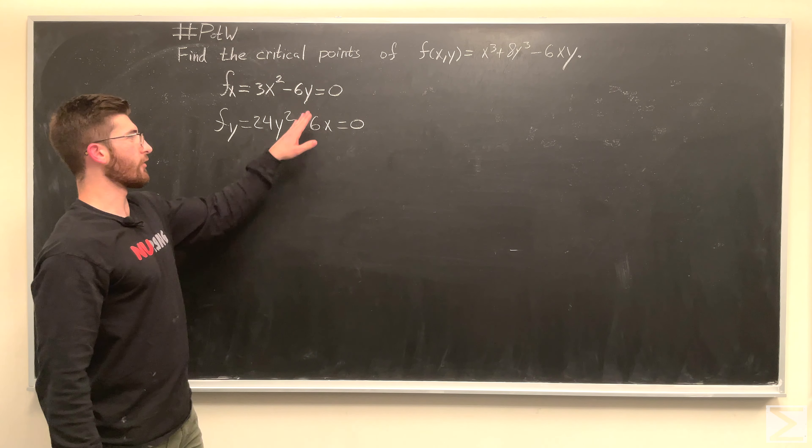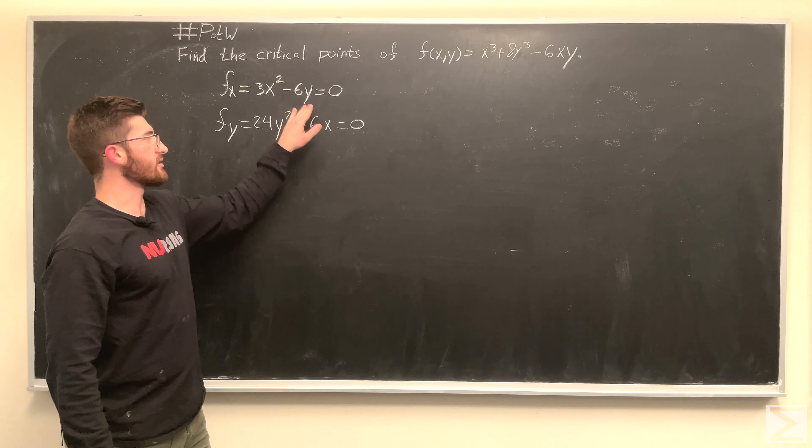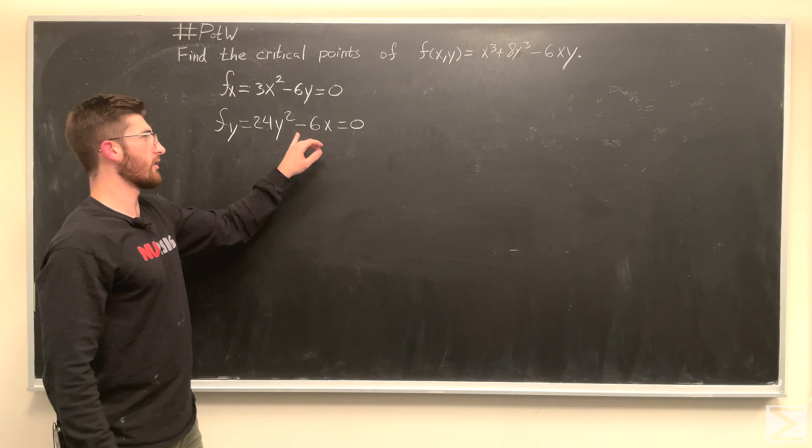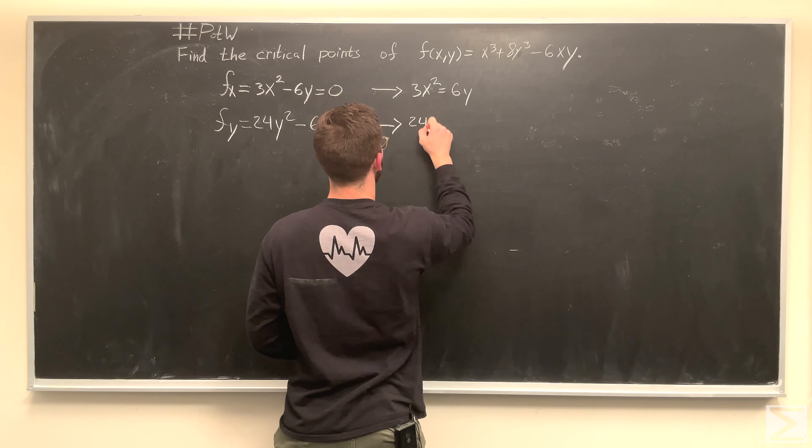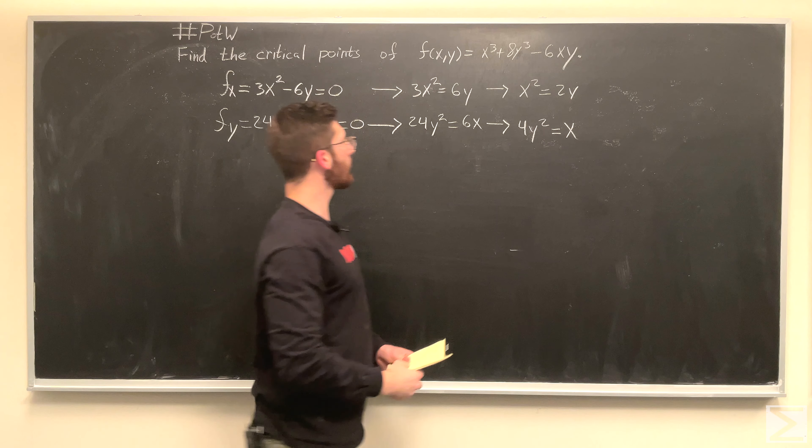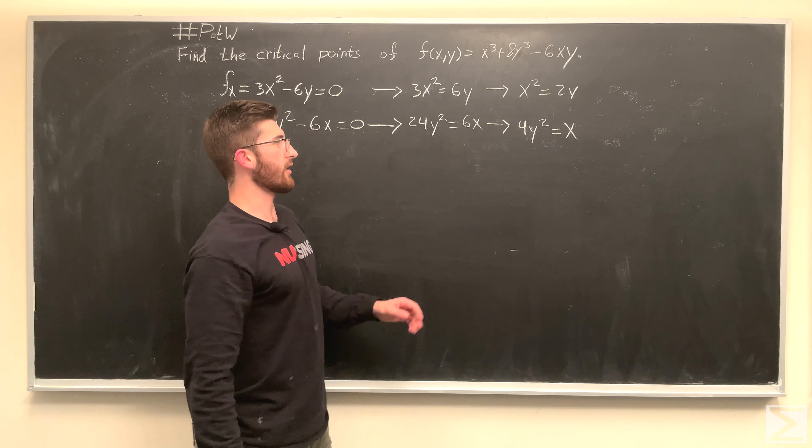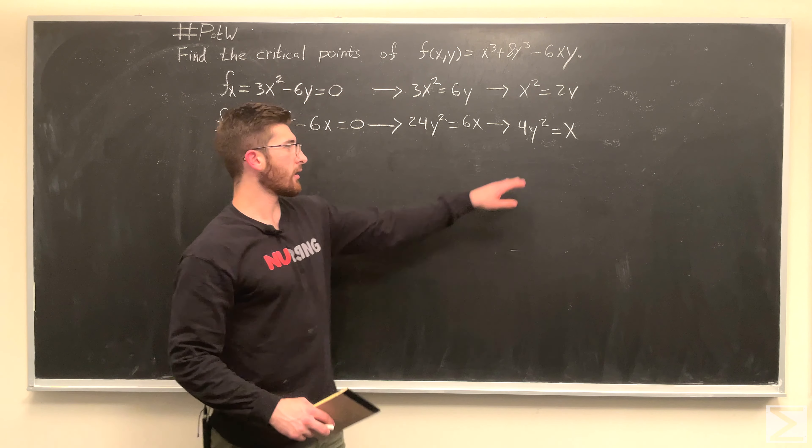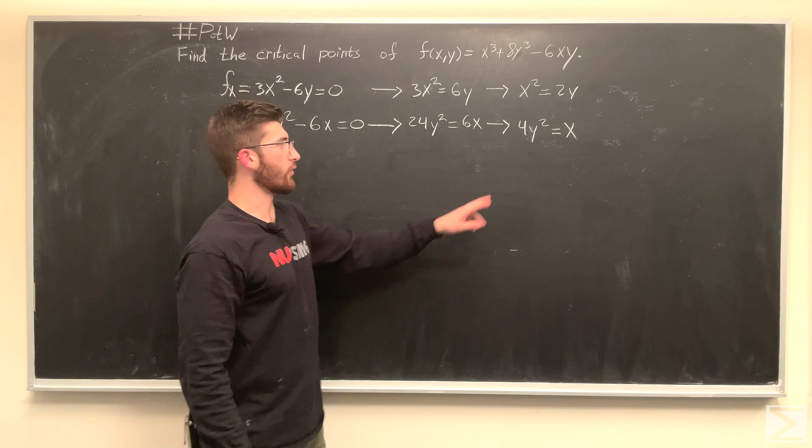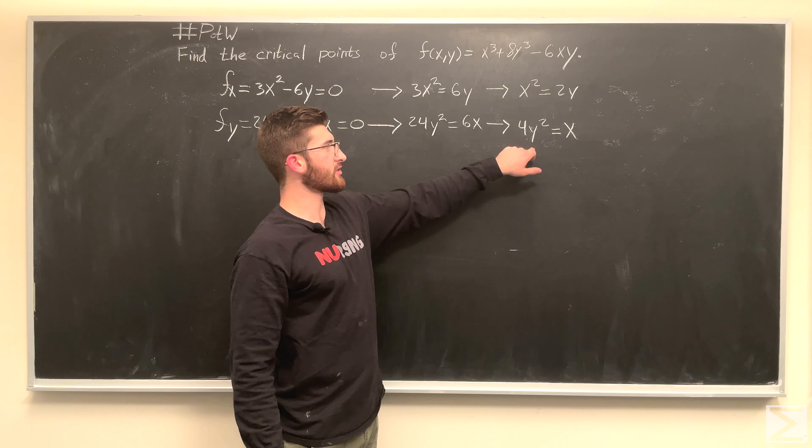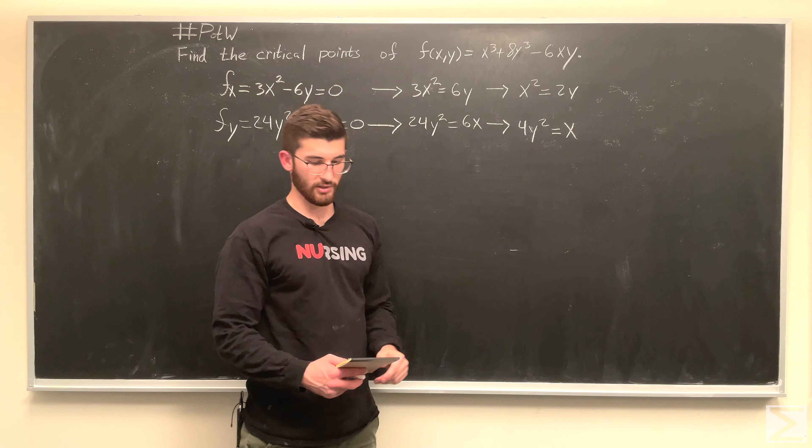So now, for both of them, let's just go ahead and add 6y over to this side, add 6x over to this side. So, we do that, and then we simplify. I'm going to get that x squared equals 2y, and down here, 4y squared equals x. So, if we have 4y squared equals x, then we can substitute 4y squared for x in this equation up here.